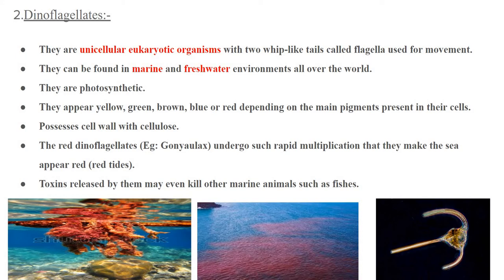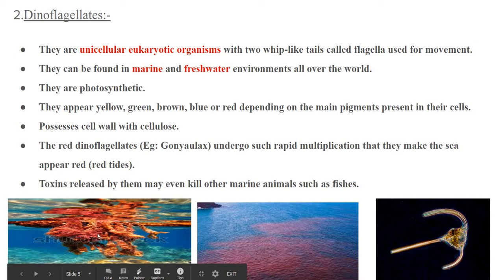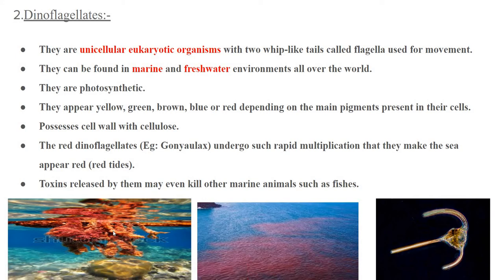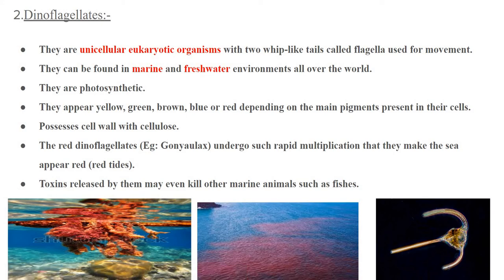They all possess a very thick cell wall made up of cellulose. There are red dinoflagellates — one example is Gonyaulax. They undergo rapid multiplication and are found in seas. Because of their presence, the seawater appears red, which is known as a red tide. The Red Sea is an example of this. They release some toxins and are even capable of killing marine animals such as fish.